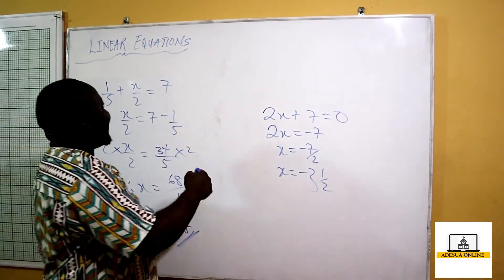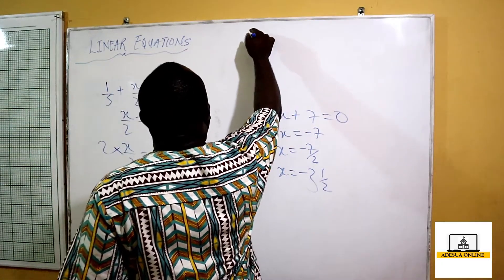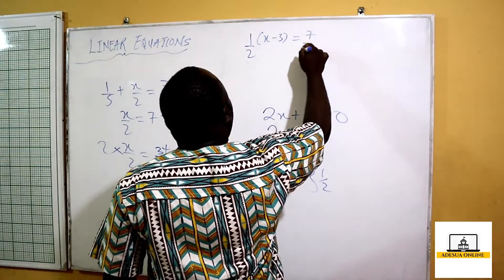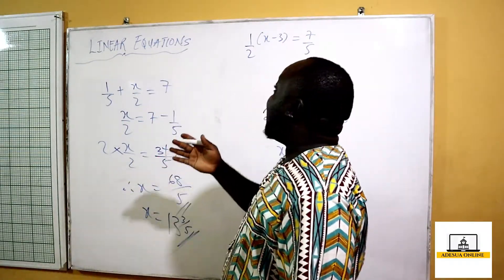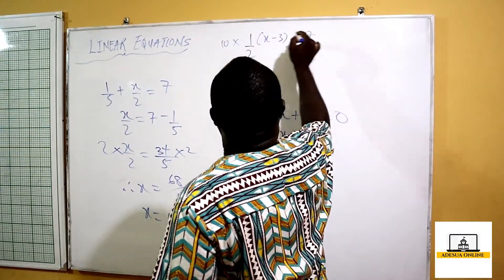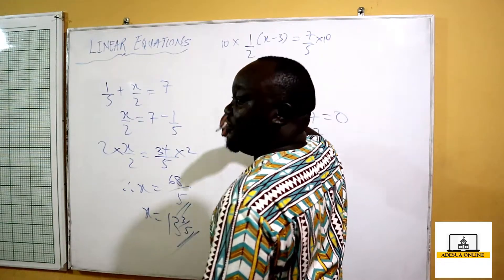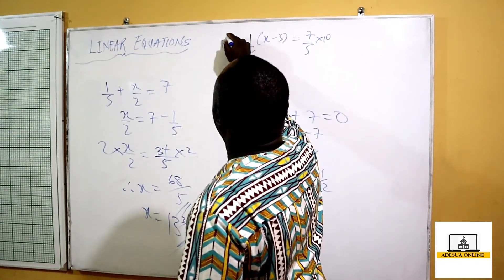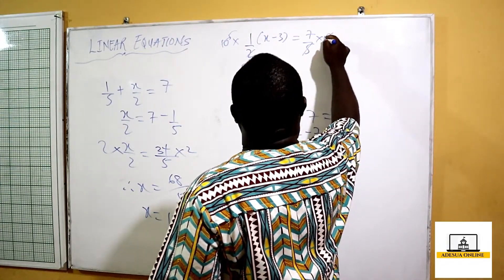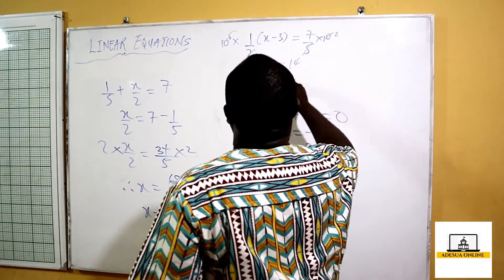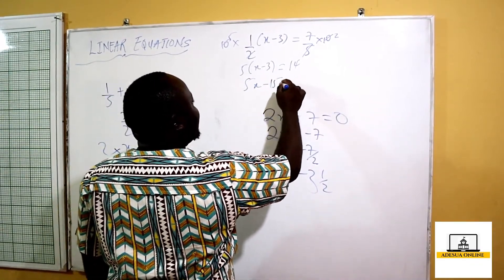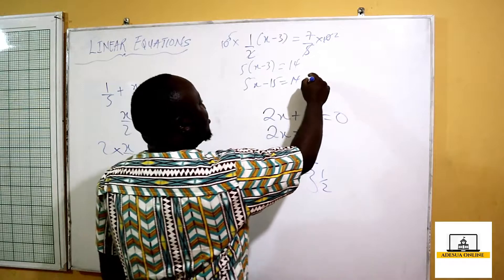Another fraction example: 1 over 2 times (x minus 3) equals 7 over 5. Here we find the LCM, which is 10. We multiply both sides by 10 to eliminate fractions: 10 divided by 2 gives 5 on the left, and 10 divided by 5 gives 2 on the right. So we get 5(x minus 3) equals 14. Expanding: 5x minus 15 equals 14.